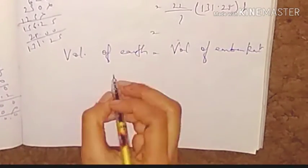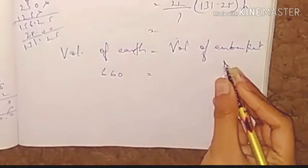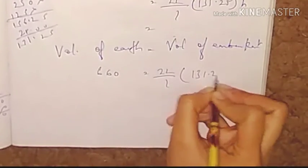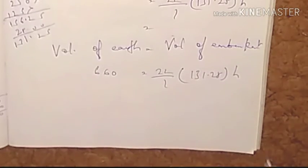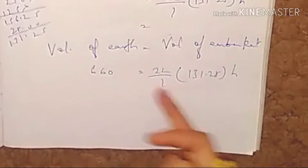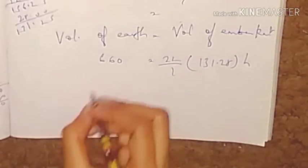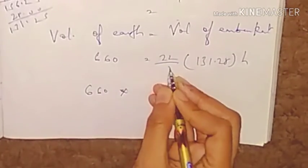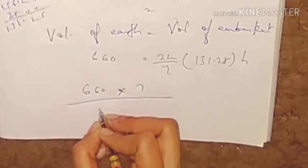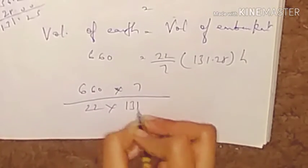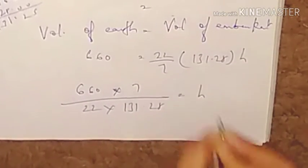Volume of earth equals volume of embankment: 22/7 × 131.25 × h. We have 660 on the left side. Now to find height h, we transfer our values: 660 equals 22/7 × 131.25 × h.